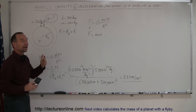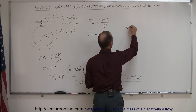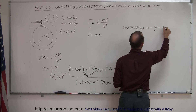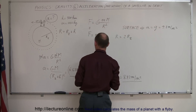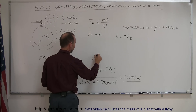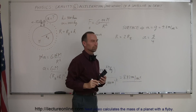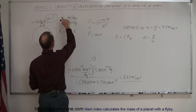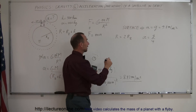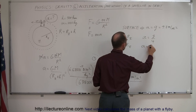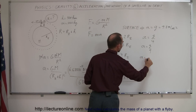The farther you are from the Earth, the less the gravitational acceleration will be. On the surface of the Earth, A equals g, which is 9.8 m/s². If you are twice as far from Earth's center — meaning R equals 2 times the radius of the Earth — then the acceleration is g divided by 4. If R equals 3 times the radius of the Earth, acceleration is g over 9. If R equals 4 times the radius of the Earth, then A equals g over 16.